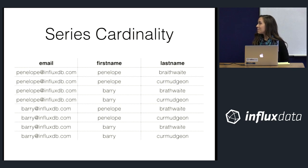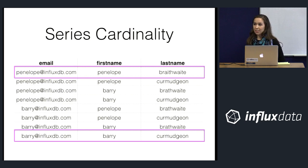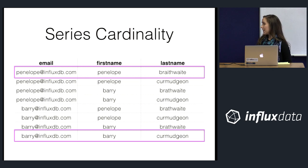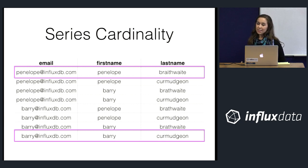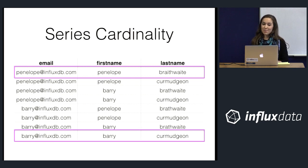But that's not quite right. The first name 'Penelope' is always going to be associated with the email penelope@influxdb.com, and 'Barry' is never going to be associated with penelope@influxdb.com. So your actual series cardinality is only 2. We call tags like 'email' independent tags, and tags like 'first name' and 'last name' dependent tags — they're already scoped by another tag, so including them doesn't actually increase your series cardinality.